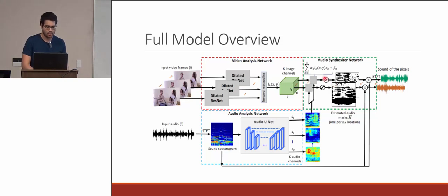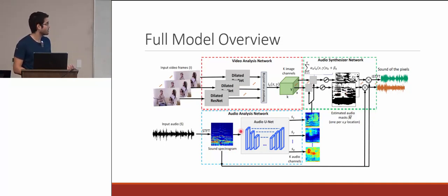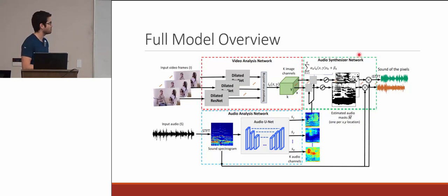Finally, they have the audio synthesizer network. This network takes the outputs from both the video analysis network and the audio analysis network and outputs a mask — black and white pixels multiplied on top of the original sound spectrogram. All pixels with value one retain the original sound, and black pixels are ignored. It outputs as many masks as there are different sound sources — in a duet, two masks for the two instruments.